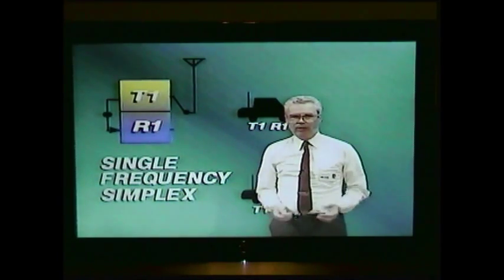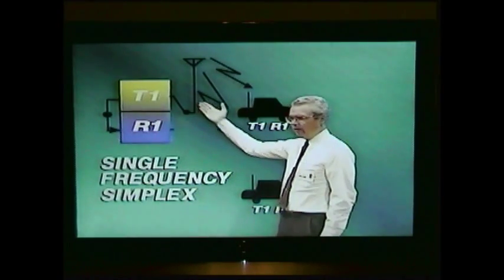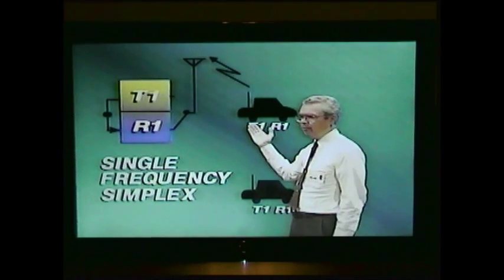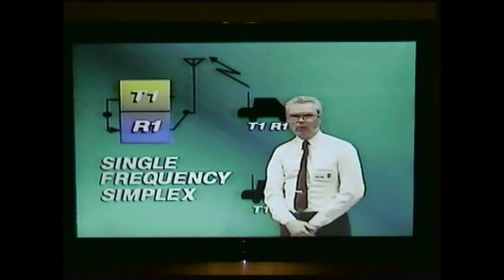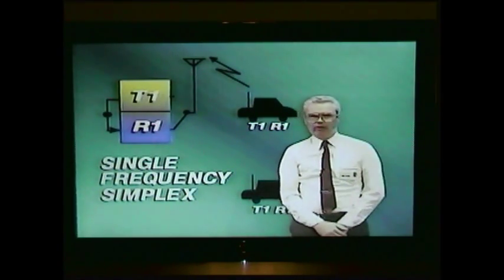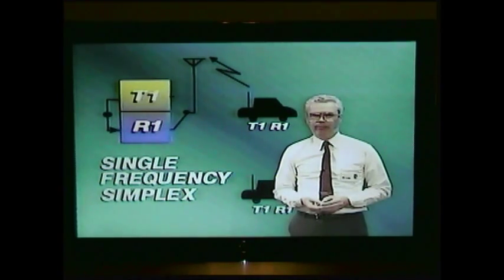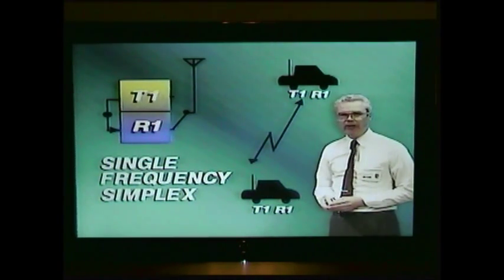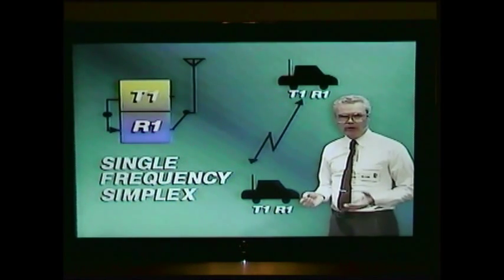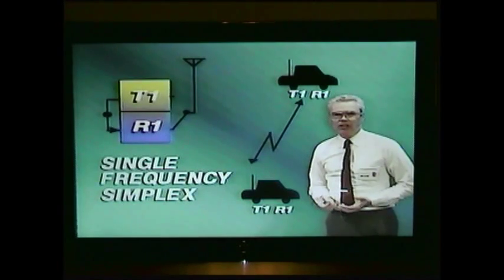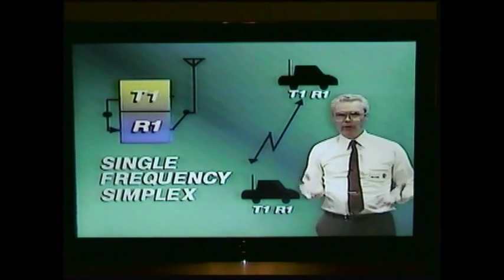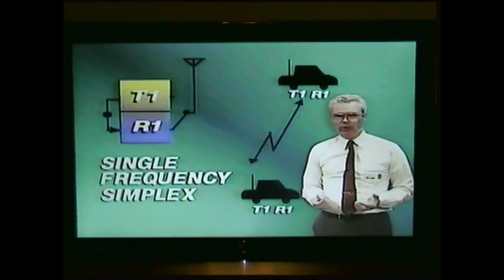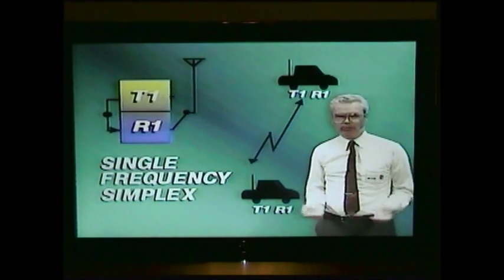The operation of the system is quite simple. The base station talks out on T1, and mobiles receive it on R1. When the mobile operator wants to talk back, he operates his T1 transmitter, and the base station hears him on R1. It's also possible to have direct mobile-to-mobile communication with this system if another mobile is within a few kilometers. Many people refer to our products as two-way radio. Occasionally a customer asks for a three-way radio system — the simplex system provides base-to-mobile, mobile-to-base, and mobile-to-mobile communication. That's three ways.